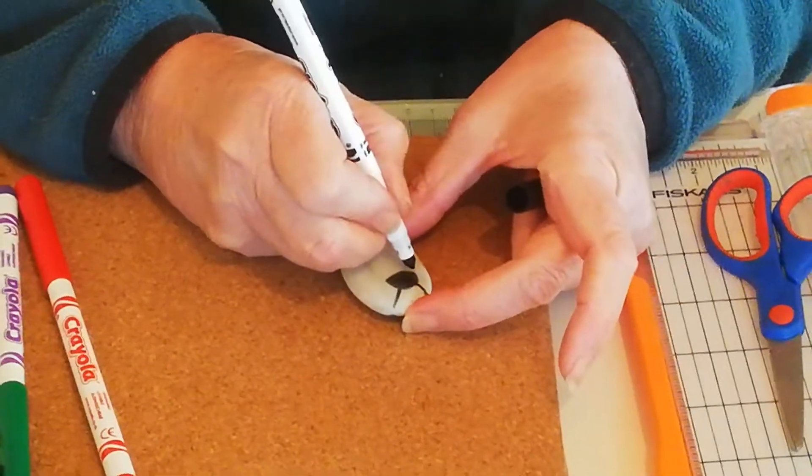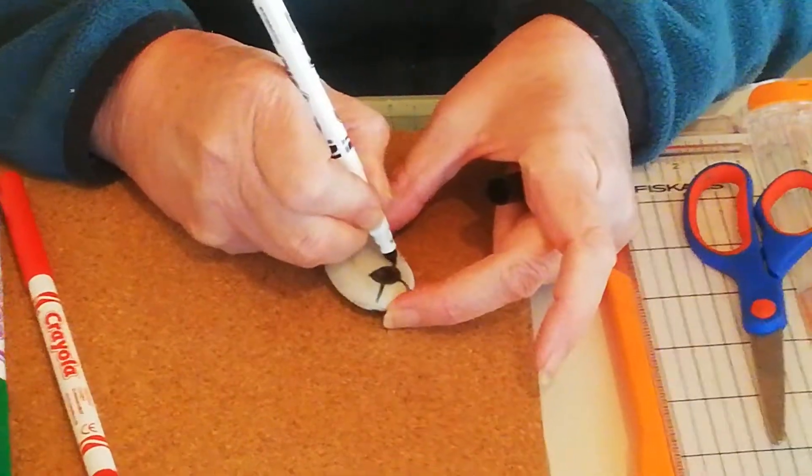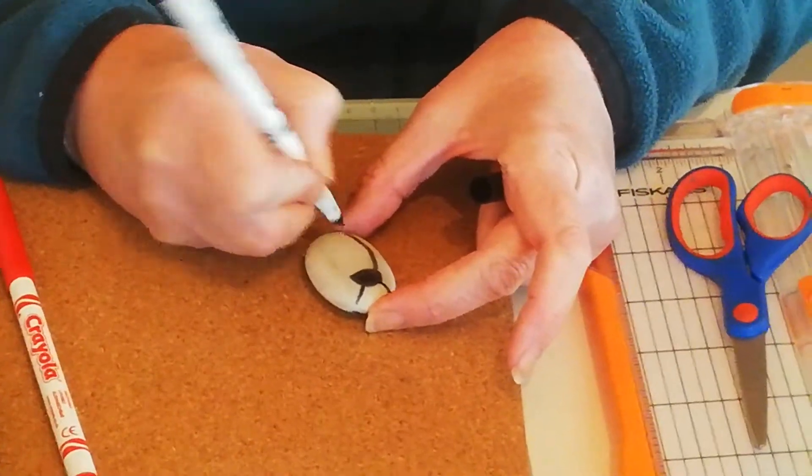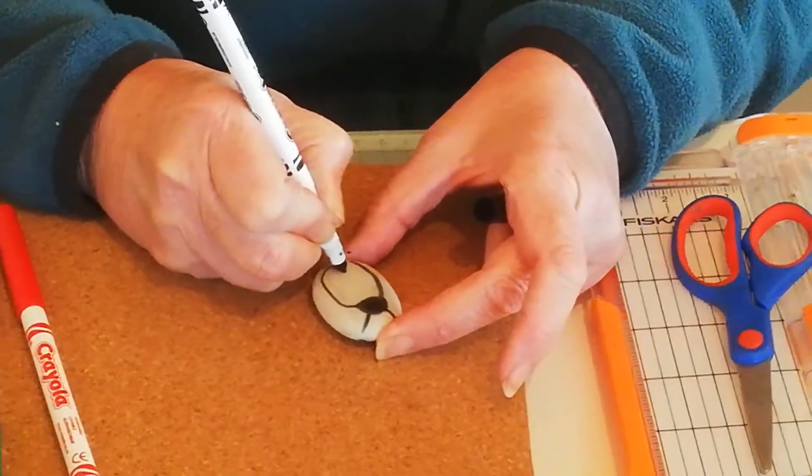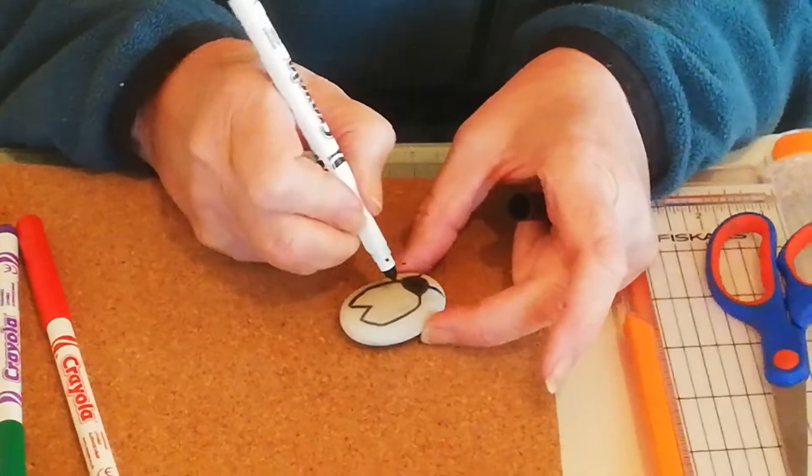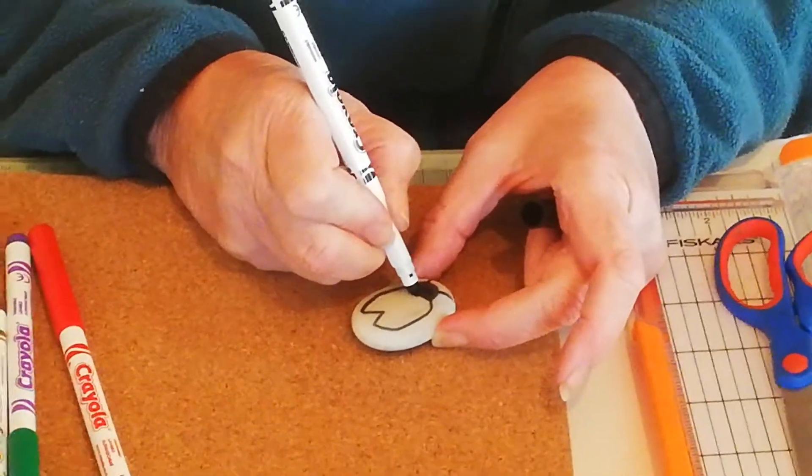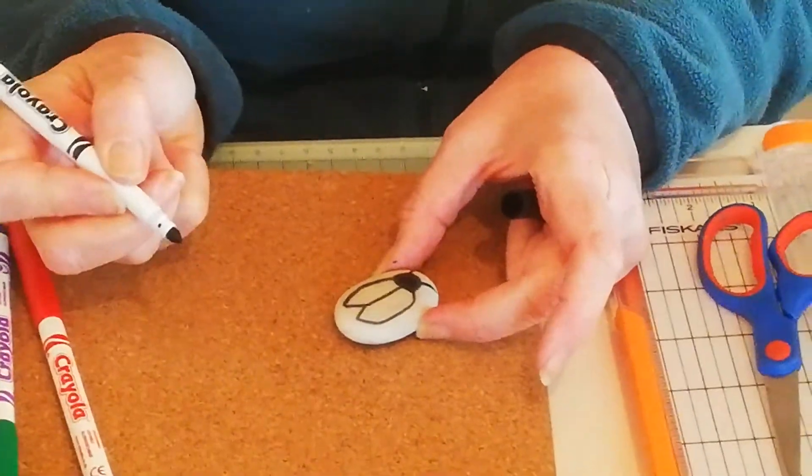Then from the bottom of the head you draw out like this and out like this, and in the middle you put a V. You draw a line from the middle of his head down to the middle of the V like that.